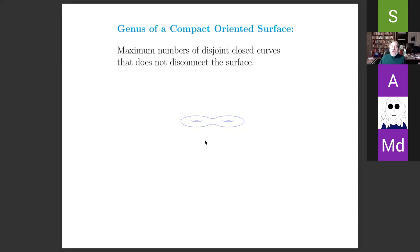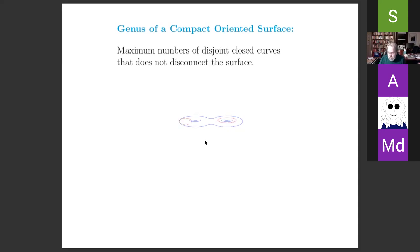It looks like a donut with two holes. The sense in which it has genus 2 is that you can draw two closed curves on the surface such that if you cut them out, it does not disconnect the surface.